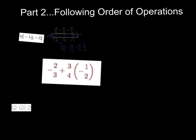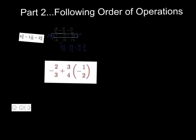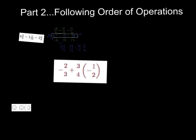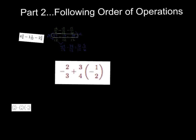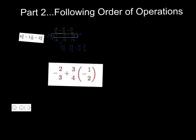Here's the next one — we have some multiplying and adding. Order of operations: we have to do multiplying and dividing before adding and subtracting. So I'm going to take 3 fourths times negative 1 half first. Multiplying across: 3 times negative 1 is negative 3, and 4 times 2 is 8 — so negative 3 eighths. Then I copy the rest: negative 2 thirds plus negative 3 eighths.